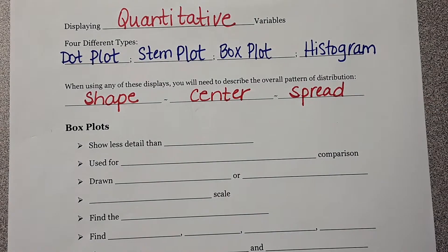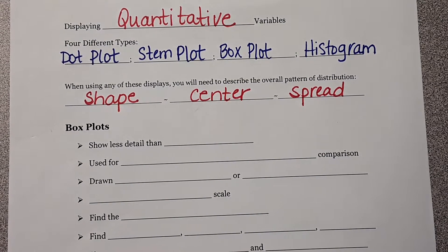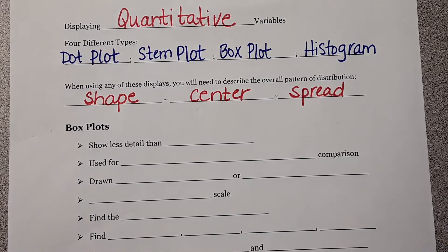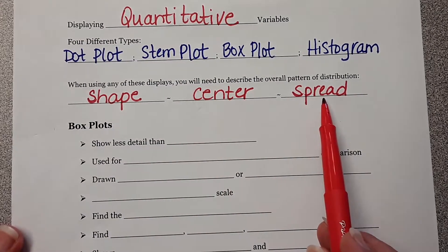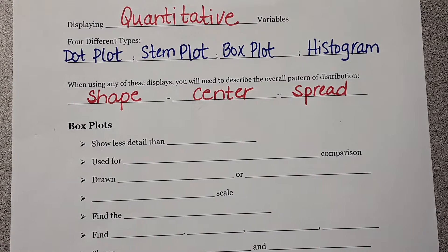Right now we're going to act like we don't know what center means, and we're going to look at something and say the center is roughly around here. Once we get past graphing it, all we're doing is looking at a graph — we're either going to make one or look at one — and we're going to talk about its shape, its center, its spread. The other thing you need to know is when you talk about a graph and you've done it visually, and you've talked about shape, center, and spread, you're also going to talk about gaps and clusters.